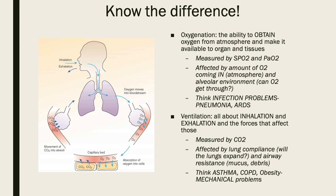Oxygenation is affected by how much oxygen you can get from the atmosphere, but also by the alveolar environment — can O2 get through those alveoli? When would oxygen not be able to get through? Think infection problems. If someone has pneumonia or ARDS, there's junk stuck in those alveoli making it really hard to get oxygen in — that's usually what causes an oxygenation problem.